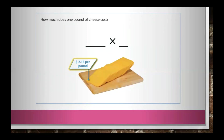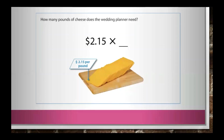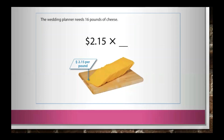How much does one pound of cheese cost? One pound of cheese costs $2.15. How many pounds of cheese does the wedding planner need? The wedding planner needs 16 pounds of cheese.